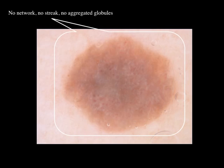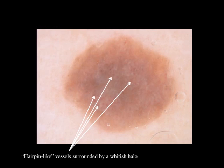And here are my comments. No network, no streak, no aggregated globules. And you can see vessels of the serpiginous-like type surrounded by a whitish halo. So this is a keratinizing tumour and most likely it's a seborrheic keratosis. And it was confirmed as seborrheic keratosis on pathology.